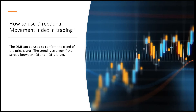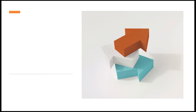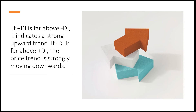The DMI can be used to confirm the trend of the price signal. The trend is stronger if the spread between the DI plus and minus is larger — the bigger the difference, the stronger the trend. If the plus DI is far above the minus DI, it indicates a strong upward trend. If the minus DI is far above the plus DI, it strongly denotes a downward movement — a downtrend.